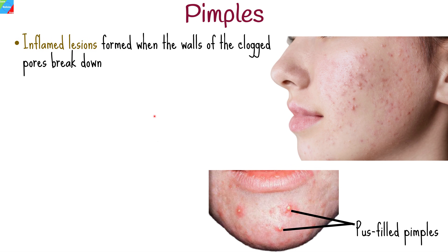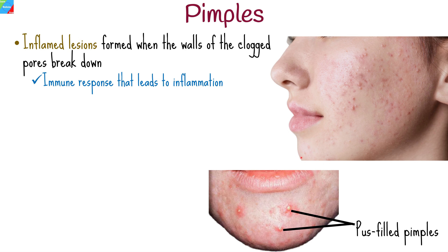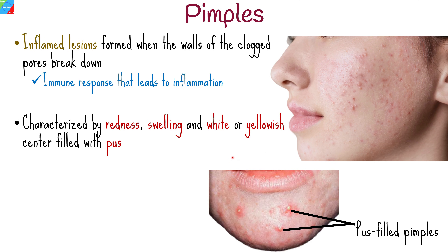Pimples are inflamed lesions that form when the walls of the clogged pores break down. This allows bacteria, oil, and dead skin cells to spread deeper into the skin, triggering an immune response that leads to inflammation. Pimples are characterized by redness, swelling, and the presence of a white or yellowish center filled with pus.